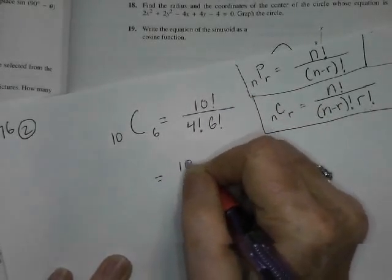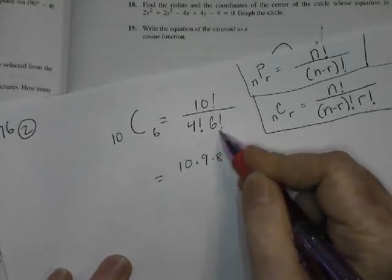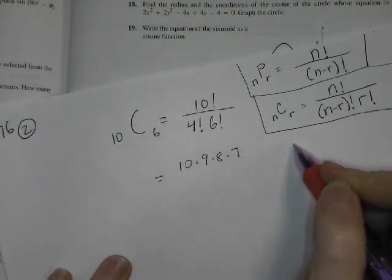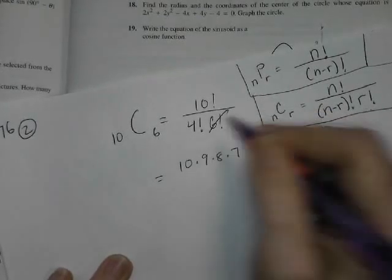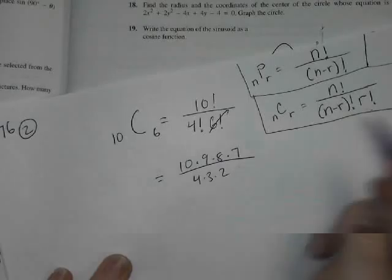Now I just do it my usual way. I go 10 times 9 times 8 times 7. I'm going to stop at 6 because the 6, 5, 4, 3, 2, 1 is going to cancel with that. But here I'm going to go 4 times 3 times 2. I never write the 1s.